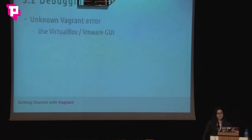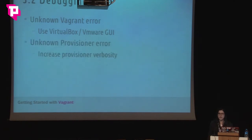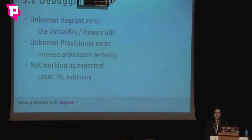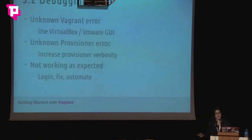For debugging: if you have some unknown Vagrant error, you can use the VirtualBox or VMware GUI interface, which usually shows more information about the error. If you have an unknown provisioner error with an unclear message, you can also increase the provisioner verbosity — it will really help you debug and find the problem. And if it's not working as expected — you don't get an error but the result isn't right — the best thing to do is log in, fix the problem manually, and then automate it afterwards. You need to know how it's done before you can automate it.